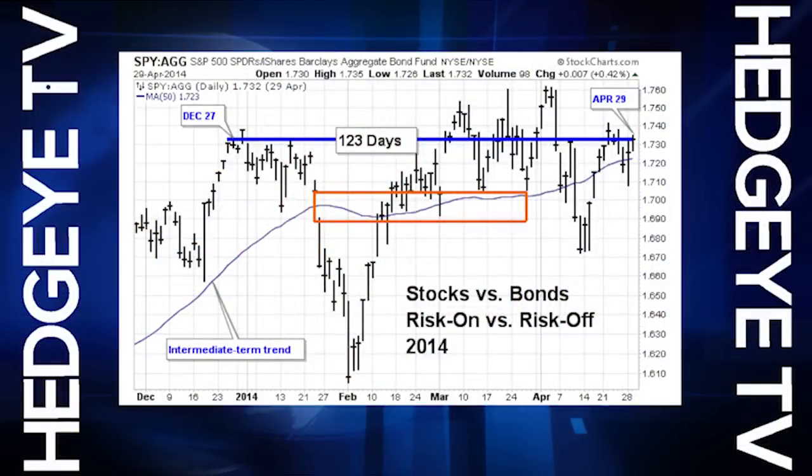What do you see out there? What's the riskiest setup that you see, either macro or stock? Well, let's talk about the big picture first. Basic economic principles should back whatever models you build. It makes sense to track the ratio of stocks risk-on versus bonds risk-off. If you look at that ratio right now, stocks relative to bonds, we've been trending sideways for 123 calendar days. Point to point, zero progress.